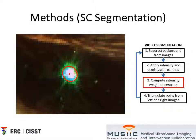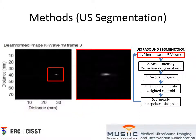We fit an ellipse around the segmented stereo camera spot and compute an intensity-weighted centroid. We do this for both the left and right images of a particular set and triangulate the two points to acquire a single 3D point.